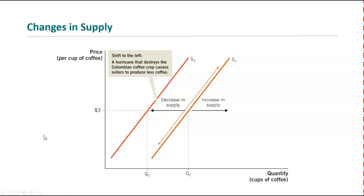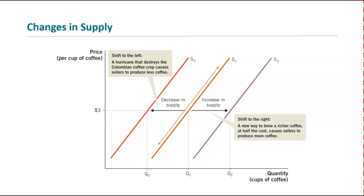On the other hand, what could cause supply of coffee to increase? One example: new technology — a new way to brew richer coffee at half the cost. It doesn't cost as much to brew an even nicer coffee, so now you can produce more even at the same price. Supply shifts to the right, just like we saw that demand can shift to the right.